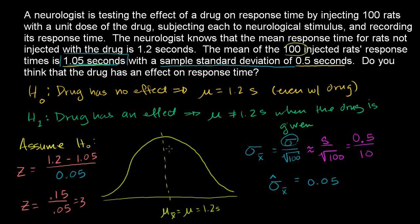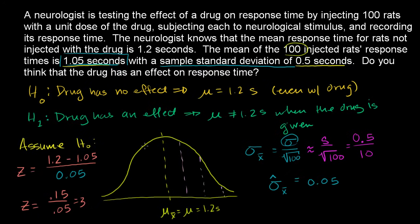Let me draw this out. This is the mean. Going out one standard deviation, two standard deviations, three standard deviations in the positive direction — and one, two, three standard deviations in the negative direction. So our result of 1.05 seconds from our 100-rat sample is right here: three standard deviations below the mean.